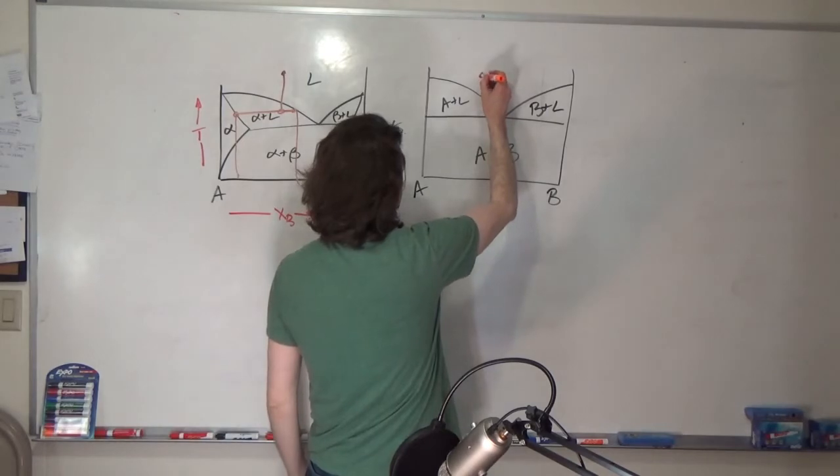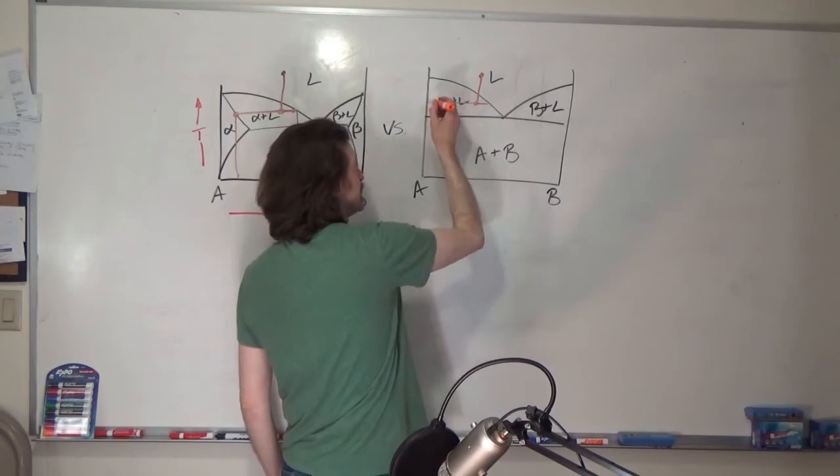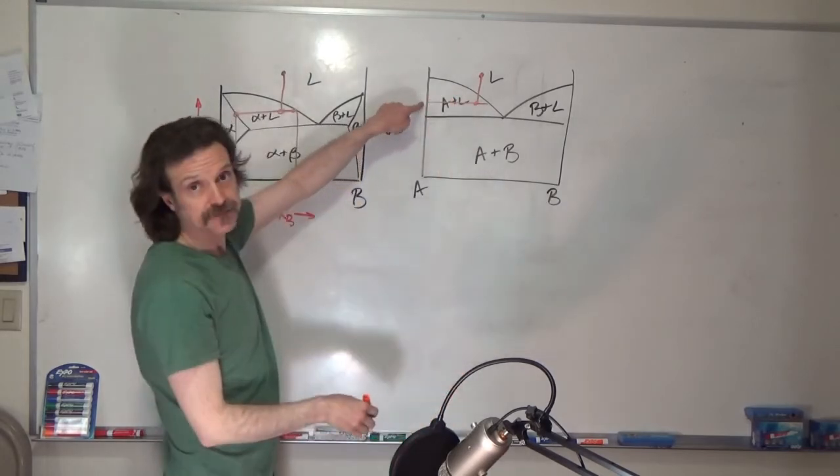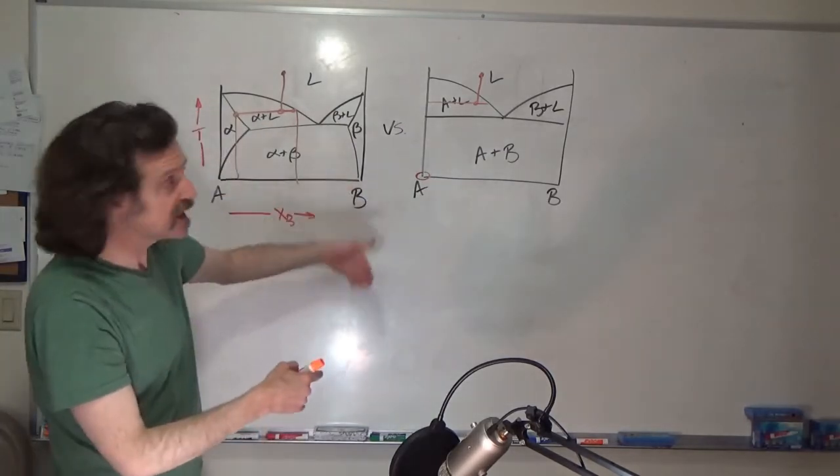in the line compound, when I cool down, I again can draw my horizontal tie line. Now on the left side, my composition is pure A, and it doesn't change as a function of temperature.